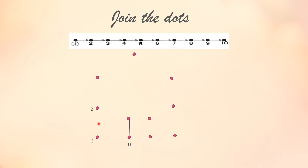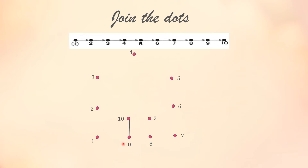This is dot number 1, dot number 2, dot number 3, 4, 5, 6, 7, 8, 9, 10. You all know that we have to join these dots in sequence. You can't join from 2 to 5 or 3 to 6. It will be wrong because you have to join the dots and make a pattern.